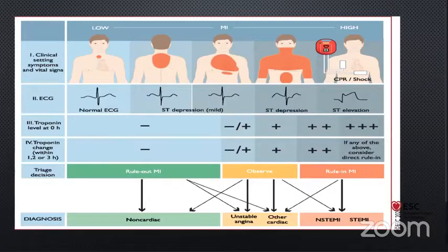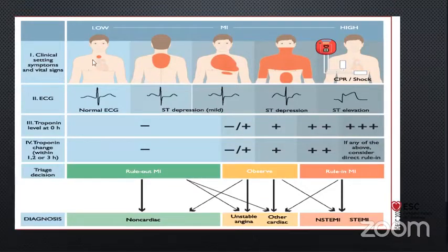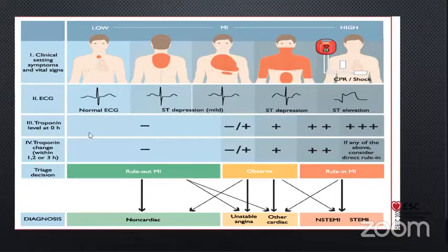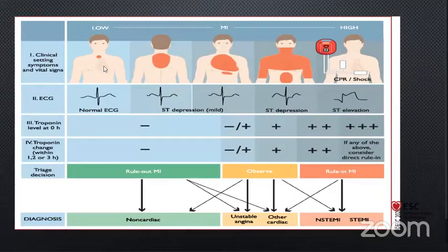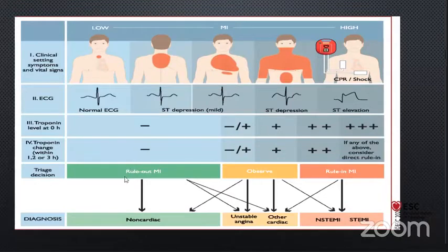Moving on to this flowchart, which should be applied to any patient presenting to the emergency department or chest pain unit. Initial assessment is based on integration of low-likelihood and high-likelihood features, driven from four clinical variables: clinical assessment including history and vital signs, 12-lead ECG, initial troponin measurement, and serial troponin thereafter. Based on these four variables, we can triage a patient to rule-in or rule-out algorithms. A patient presenting with focal localized chest pain and normal ECG is very unlikely to have acute MI and can be easily ruled out.